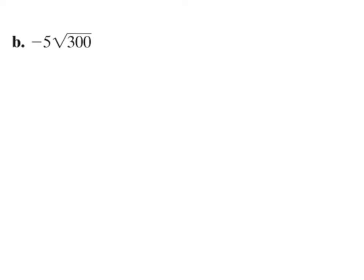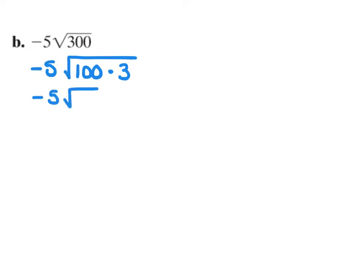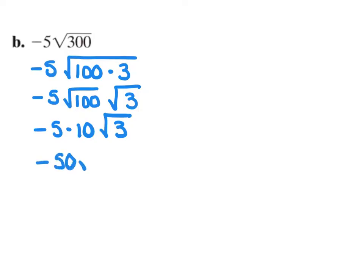In our next example, we have negative 5 square root of 300. We now have to deal with something where there's a coefficient outside. However, simplifying the radical is the exact same. The largest perfect square that divides into 300 is 100. So it becomes negative 5 square root of 100 times 3. I can split up the radical so it's negative 5 square root of 100 times square root of 3. The square root of 100 is 10, so it becomes negative 5 times 10 square root of 3. Multiplying negative 5 times 10 gives negative 50 square root of 3, which is your final answer.